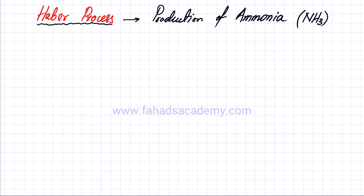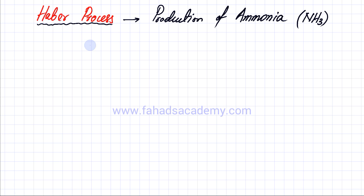We will now discuss the Haber process, which is one of the applications of Le Chatelier's principle. The Haber process is a very important process in which ammonia is produced. Ammonia is a very important chemical used to make fertilizers, nitric acid, detergents, and explosives — it's basically a raw material for many products. We will start discussing the Haber process and I'll first give you the equation.